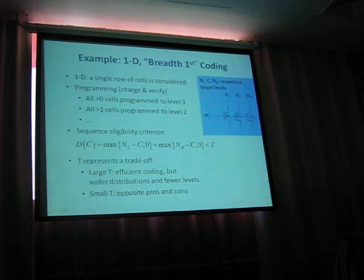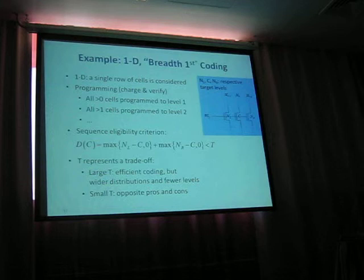If we have a one-dimensional breadth-first coding in which a single row of cells is considered, programming is done as follows. First, all the cells that have to be programmed to a level higher than 0 are programmed to level 1.